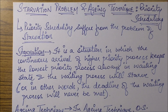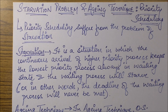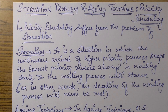Hello friends. In this session we are going to discuss some of the problems which arise in priority scheduling. Priority scheduling is famous for a very famous problem which is the starvation problem, and its solution is the aging technique. We will discuss what the starvation problem is and what the aging technique is.